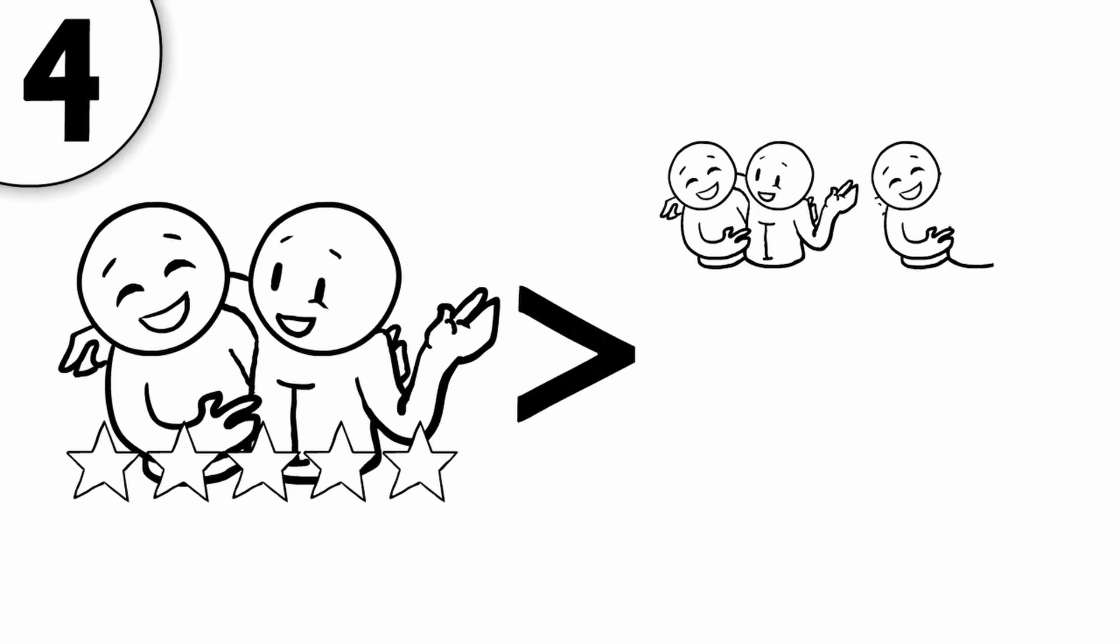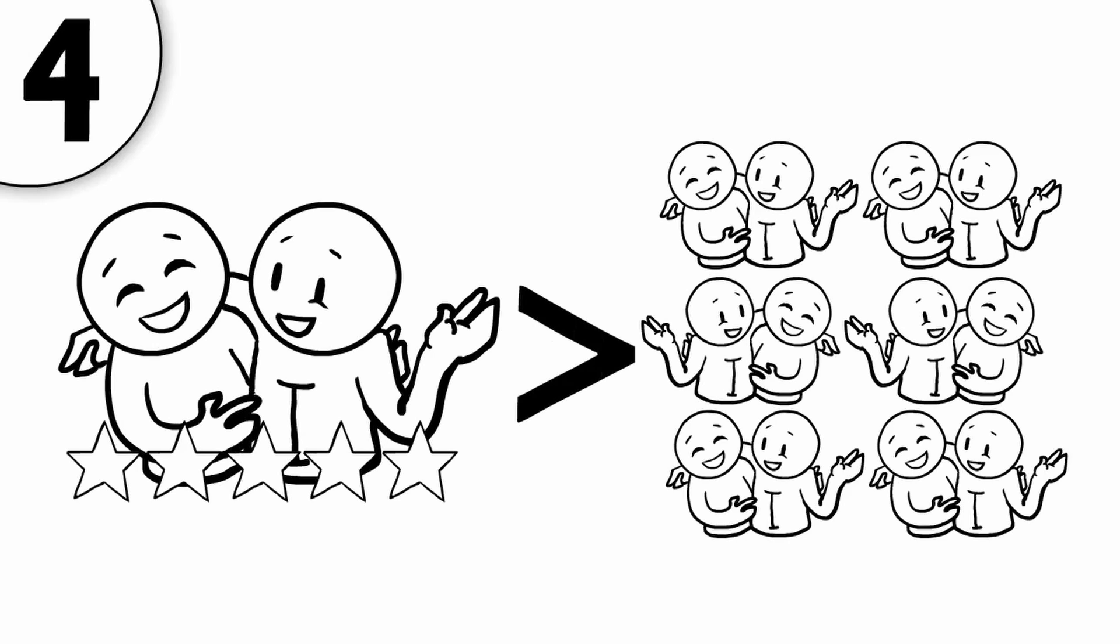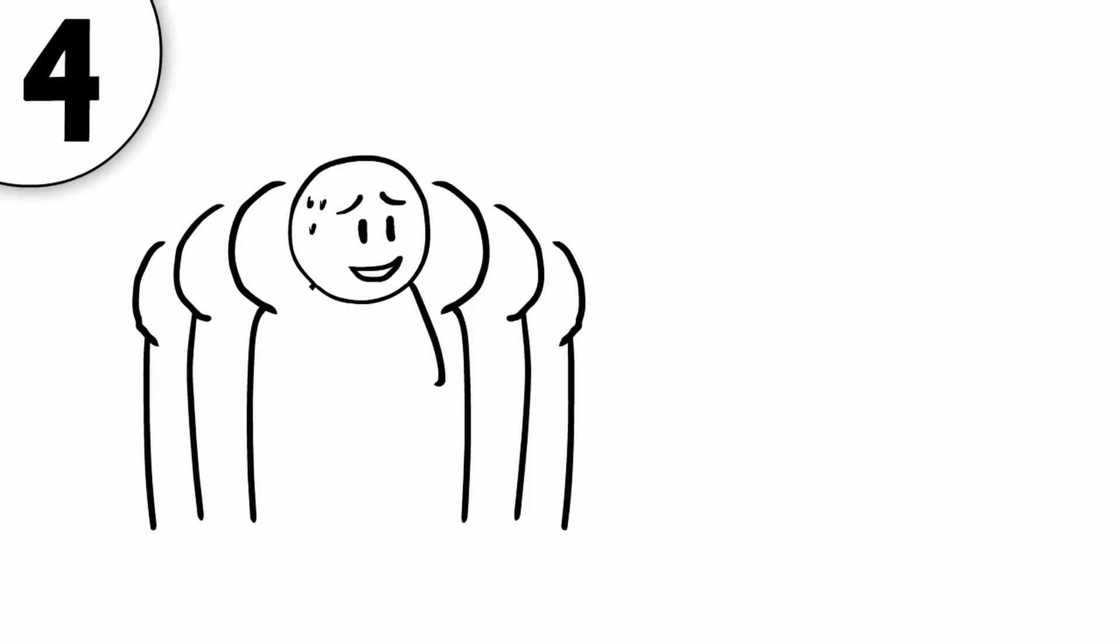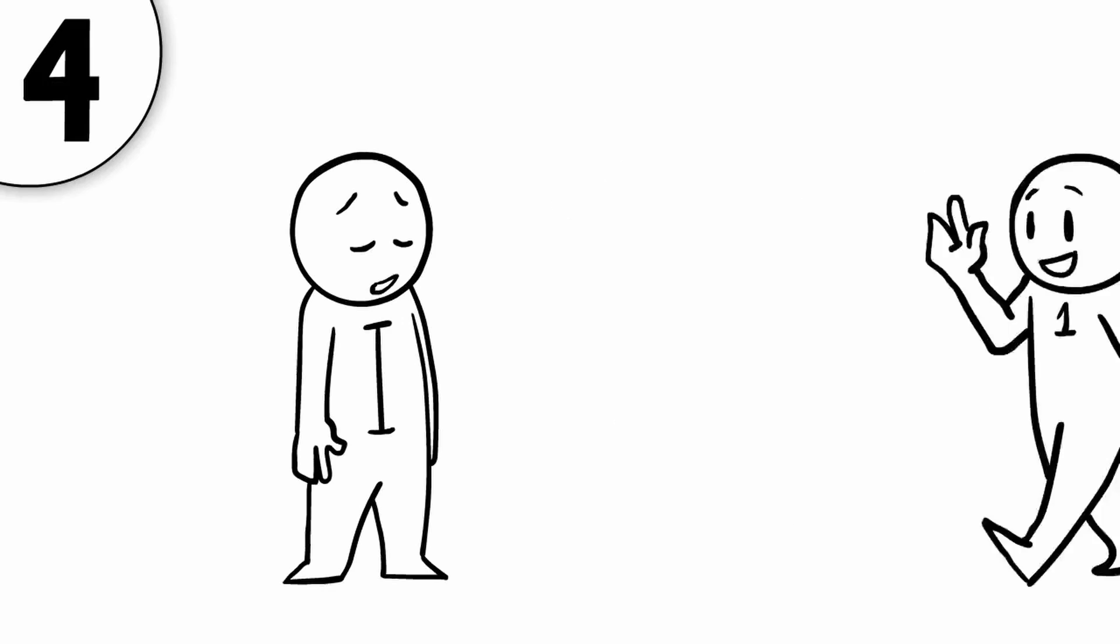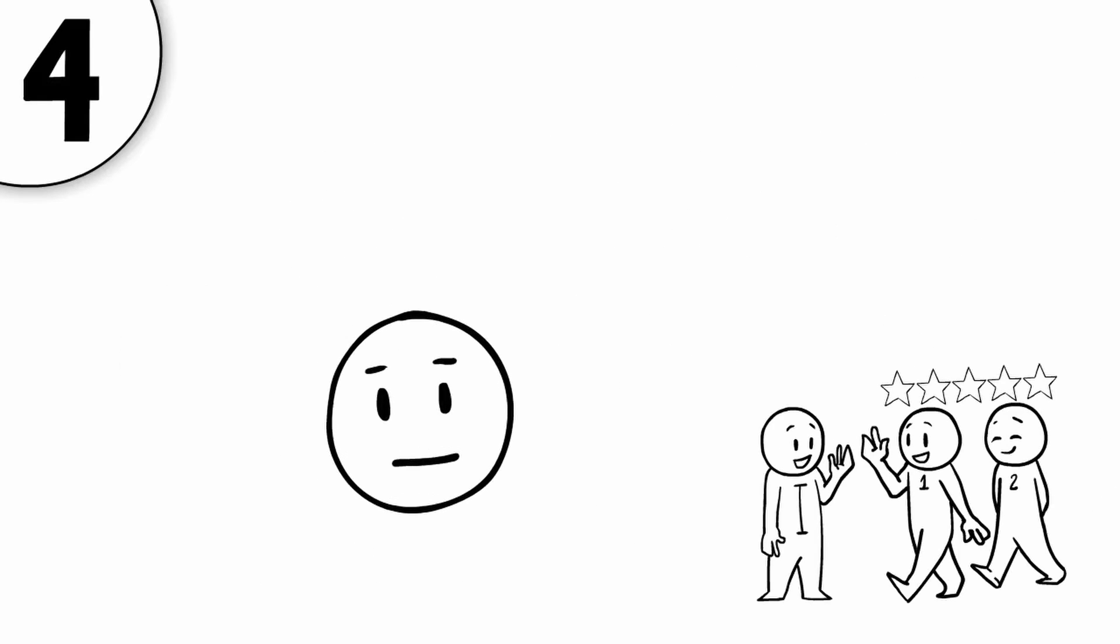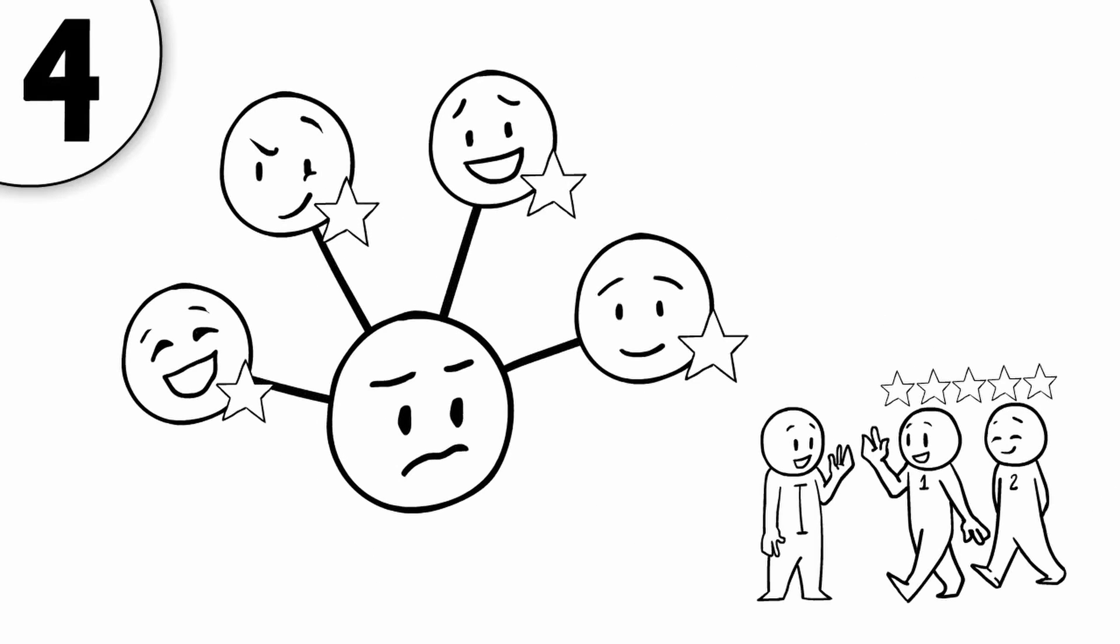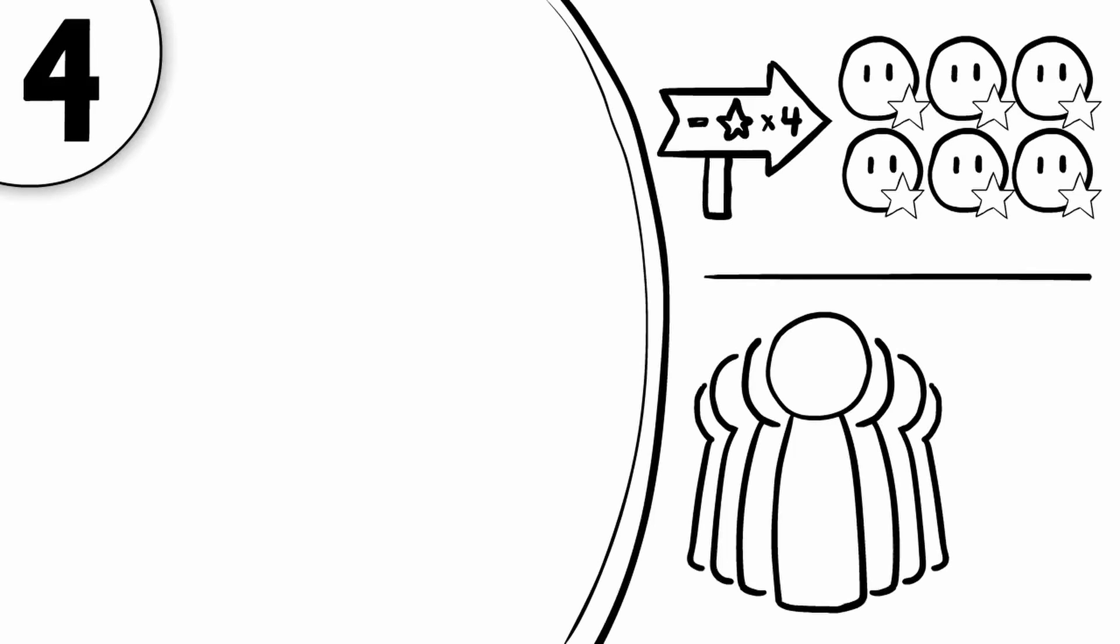Four: the quality of your friendships are more important to you than the quantity. Introverts don't like having a large group of friends and prefer to have one or two best friends rather than many acquaintances they aren't as close to. They are careful about who they let into their social circle and prefer one-on-one interactions instead of large group settings.